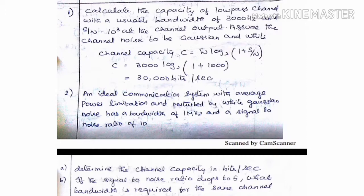Problem 1: Calculate the capacity of a low-pass channel with a useful bandwidth of 3000 Hz. The bandwidth is 3000 Hz and S by N is 10 to the power 3. Assume the channel noise to be Gaussian and white.